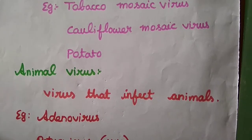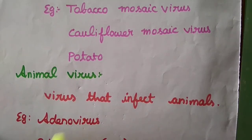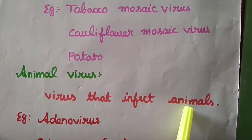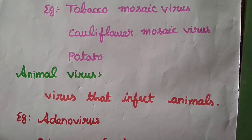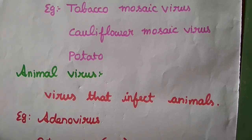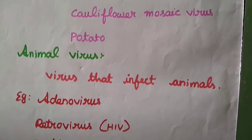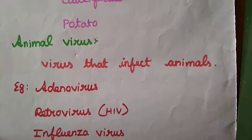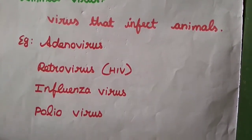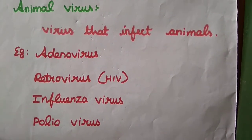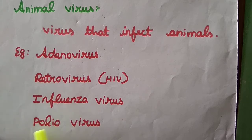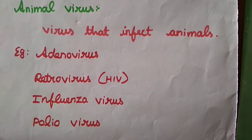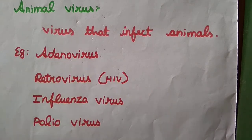The next type is the animal virus — viruses that affect animals. Examples include adenovirus, retrovirus, influenza virus, and polio virus. Retrovirus includes HIV. These viruses affect the animal body.